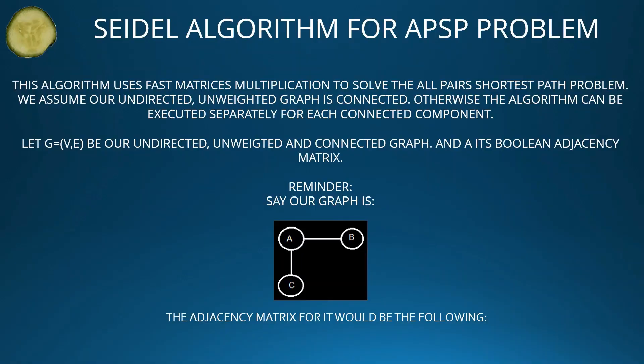Let us now see the Seidel algorithm for the APSP problem. This algorithm uses fast matrix multiplication to solve the All-Pairs shortest path problem. We assume our undirected, unweighted graph is connected. Otherwise, the algorithm can be executed separately for each connected component.